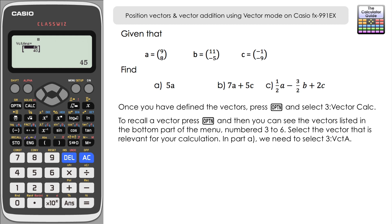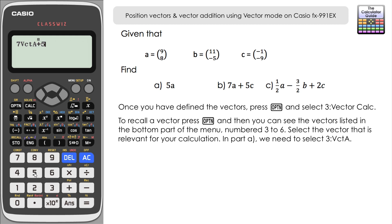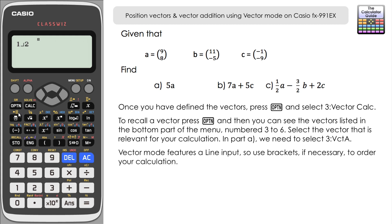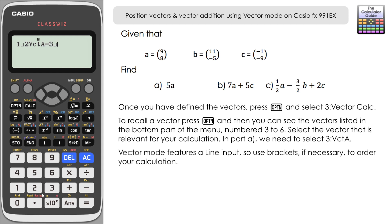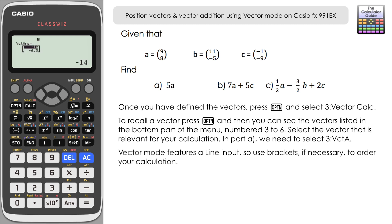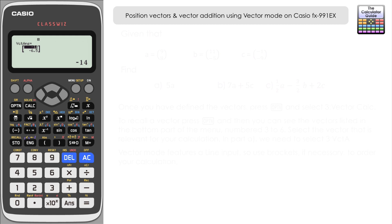For part b, 7a plus 5c: input 7 then Option and vector A (option 3), plus 5 then Option and vector C (option 5), press equals — the result is 58 and 11. For part c, input one half of vector A (option 3) minus three halves of vector B (option 4) plus 2 lots of vector C (option 5), press equals — the answer is negative 14 and negative 6.5.